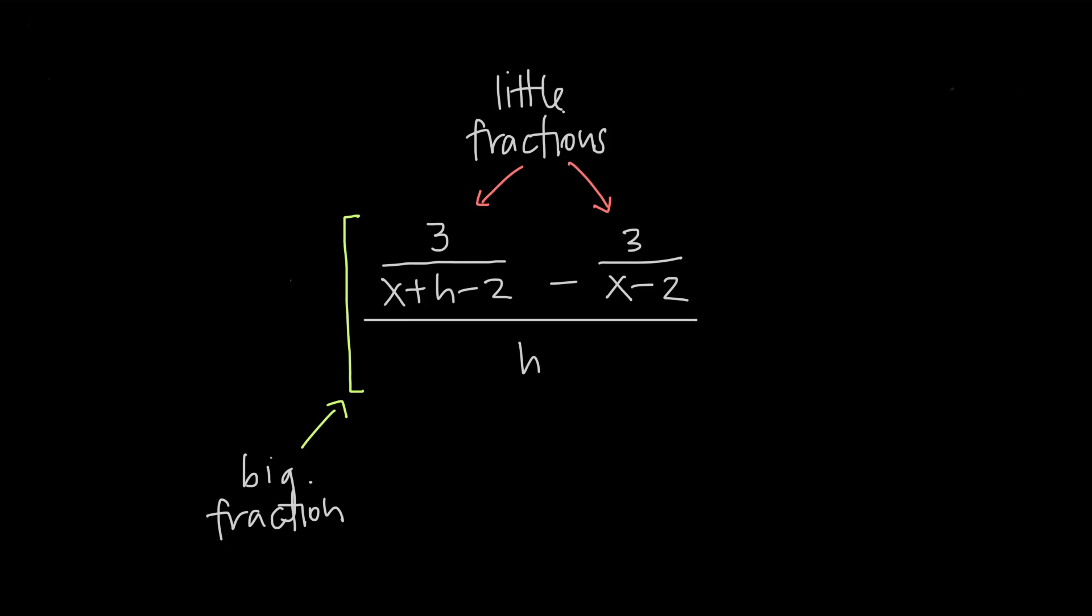You want to find a common denominator for the little fractions. So the denominator of the first little fraction is x plus h minus 2, and the denominator of this second little fraction is x minus 2. The easiest way to find a common denominator is just to multiply these together.